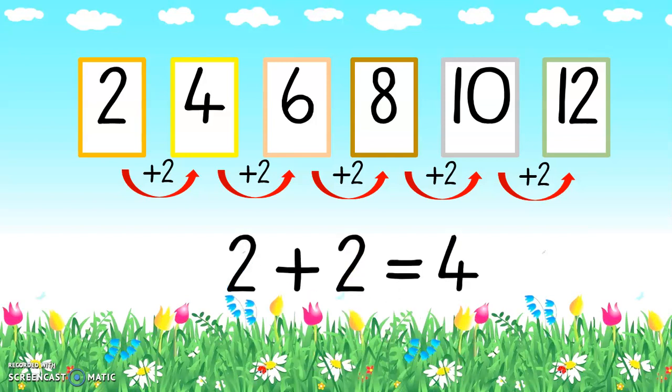So if I had to write it down as a sum: the first one will be two plus two equals four — so two, four. If I had to write another sum, it would be four plus two equals six. Six plus two equals eight. Eight plus two equals ten. And ten plus two equals twelve, and so it carries on. So counting in twos, the number pattern is that we are adding two to each number: two, four, six, eight, ten, twelve.